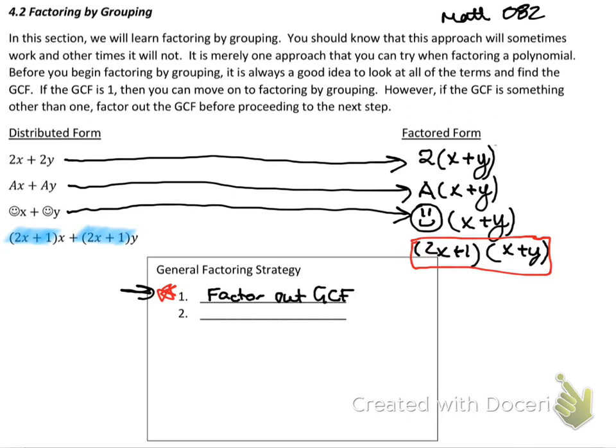So once we're done that, then the next thing is if you have four terms, then we are going to use what's called factoring by grouping. And that's what this section is on. So let's go ahead and do an example.